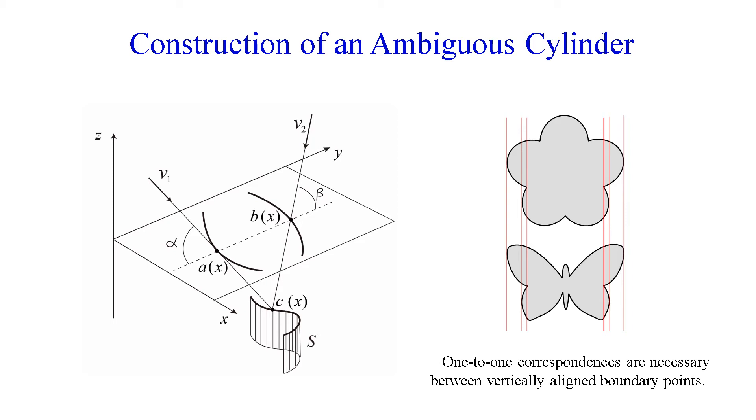Two shapes can be realized by an ambiguous cylinder if there is a one-to-one correspondence between vertically aligned points on the boundaries. This can be understood in the following way.